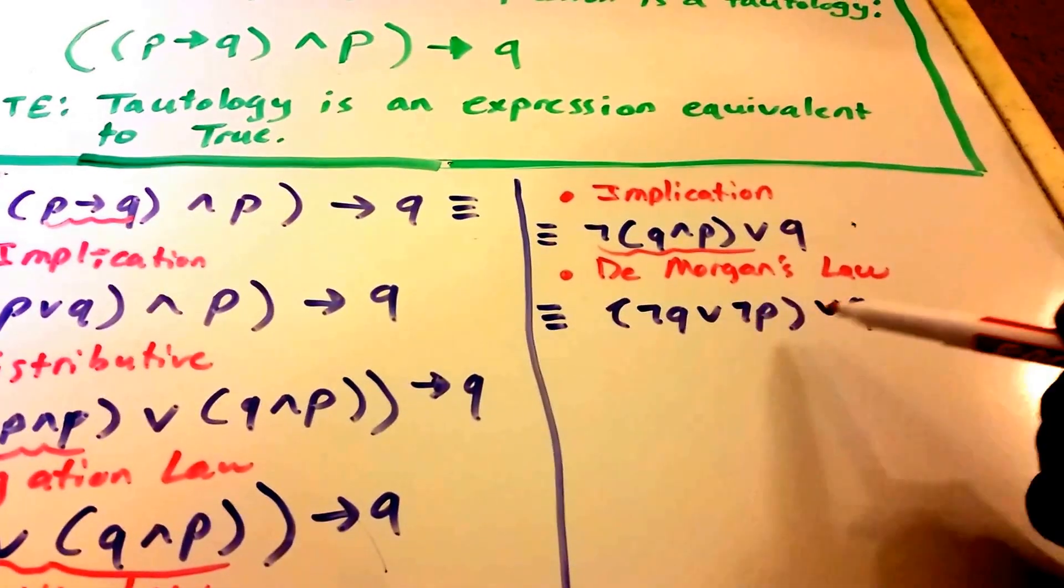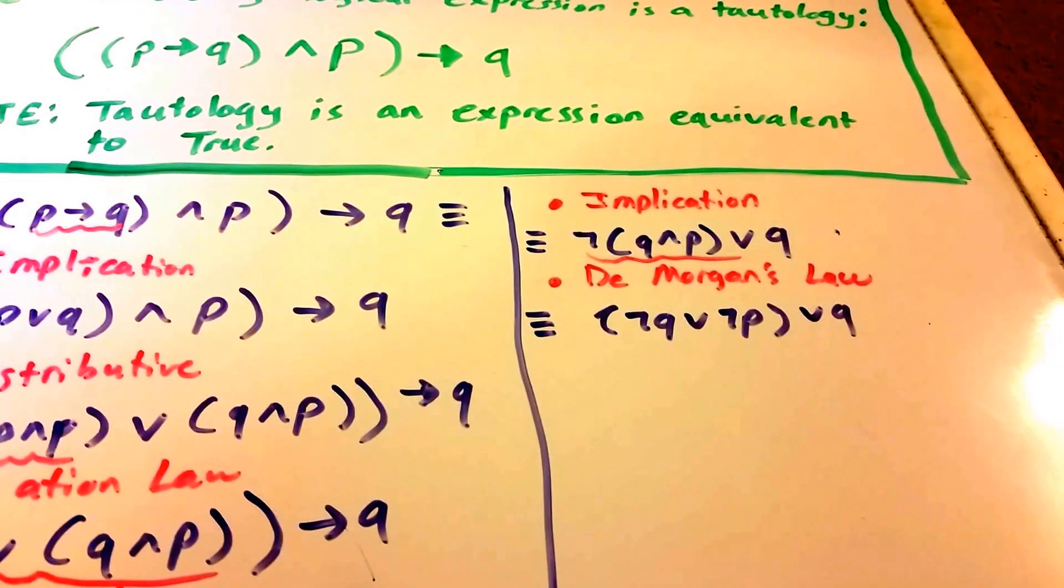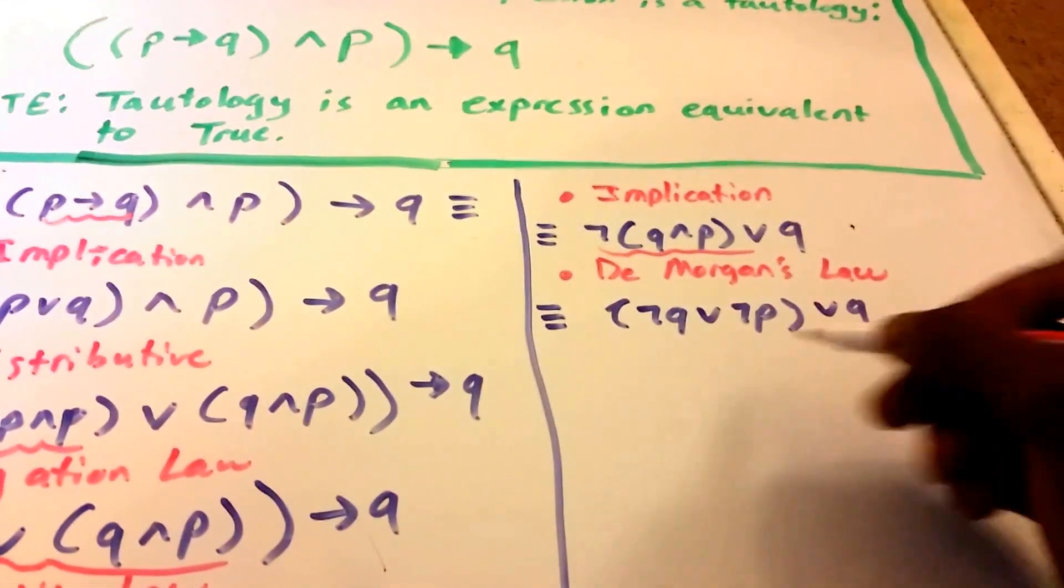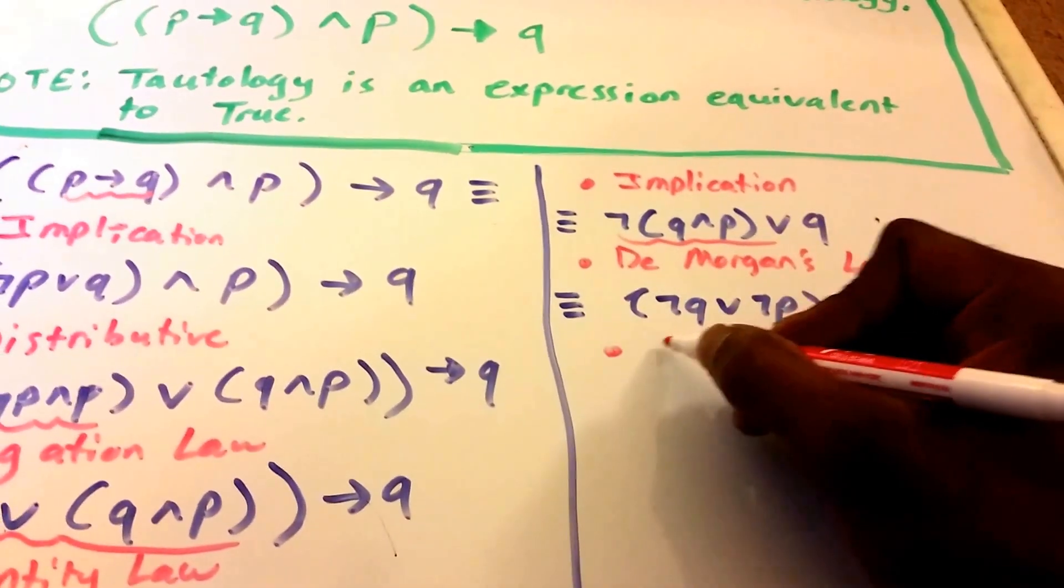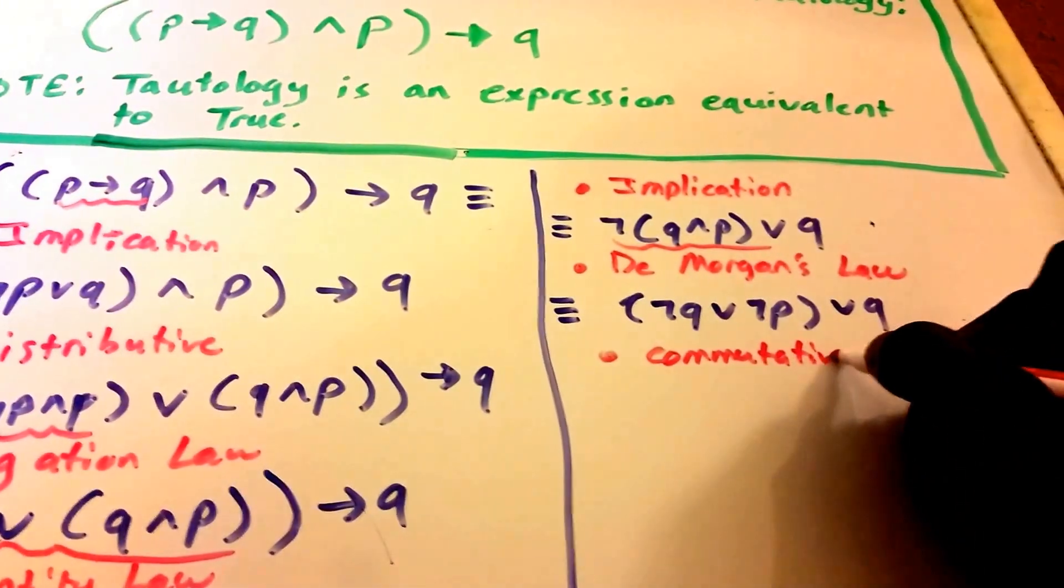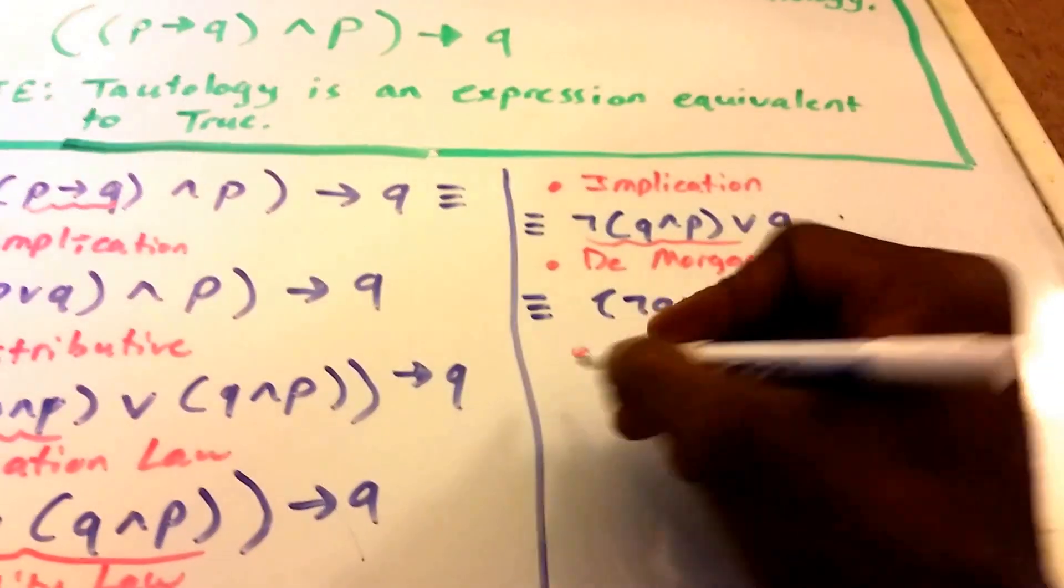That was De Morgan's. So now let's use the, I think probably the associative law or the commutative law. So first what we're going to do is we're going to use the commutative law. Usually I do this in one step, both the commutative and the associative. But using the commutative law,